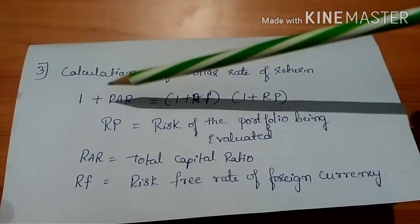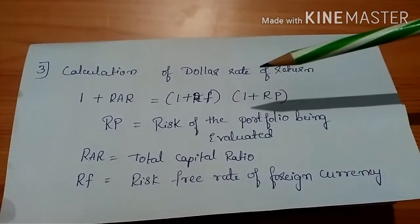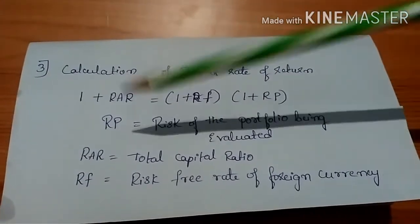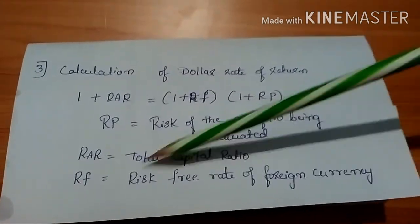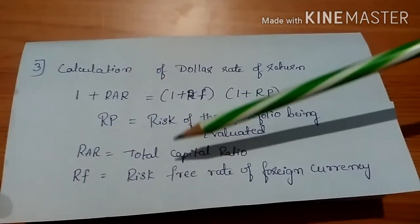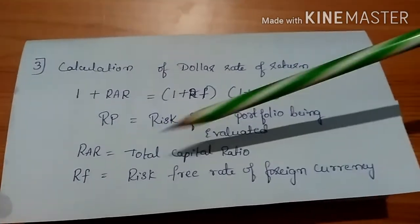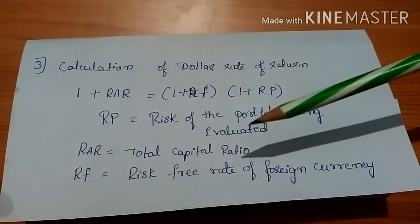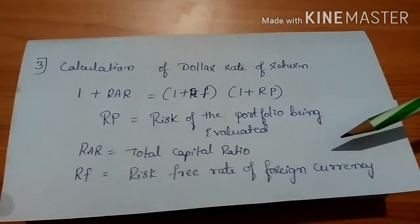The formula is: 1 plus RAR equals (1 plus RF) multiplied with (1 plus RP). Here RP means risk of the portfolio being evaluated, and RAR is also called total capital ratio, which is given in the problem as the rate or total rate of the project. RF is the risk-free rate of foreign currency.